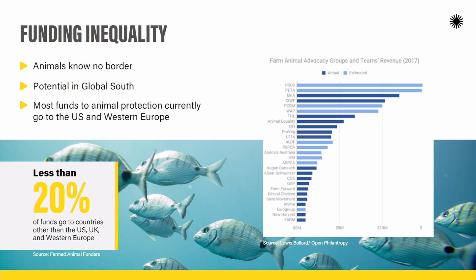Those are the three biggest challenges that animals in the Global South face. I would add a fourth issue: when we saw the first map, we noted that at least 82% of animals are currently living in the Global South.